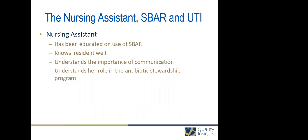So Lisa takes care of Mrs. McKee five days a week. They've known each other since Mrs. McKee was admitted almost two years ago and they've formed a very close relationship. Mrs. McKee's daughter Sandy has also grown to know and trust the CNA Lisa. Lisa is picking up Mrs. McKee's lunch tray as Sandy, the daughter, arrives for her weekly visit. Mrs. McKee is sitting in her wheelchair and the three women talk for a few minutes. Mrs. McKee is her normal, chatty self, but both Lisa and Sandy notice that she seems a little bit confused during a conversation about an upcoming family gathering that she's really been looking forward to.